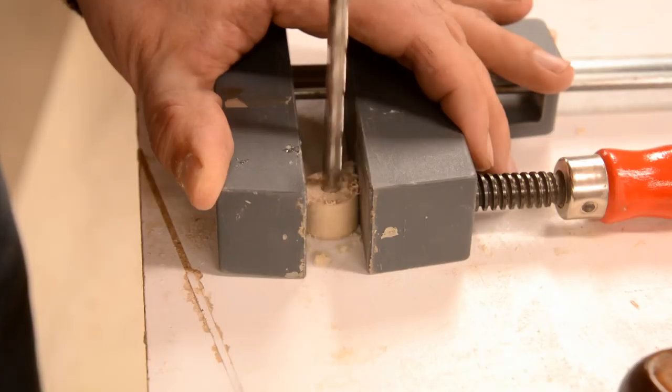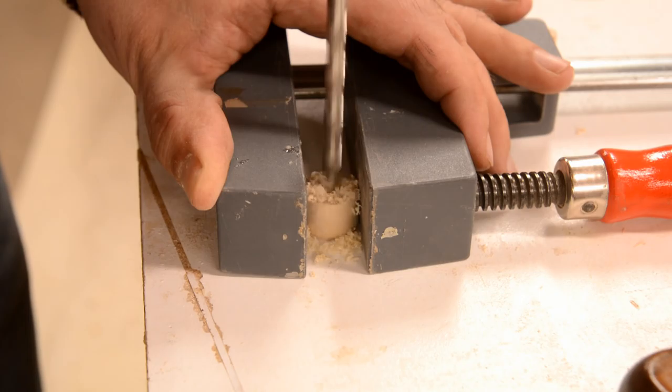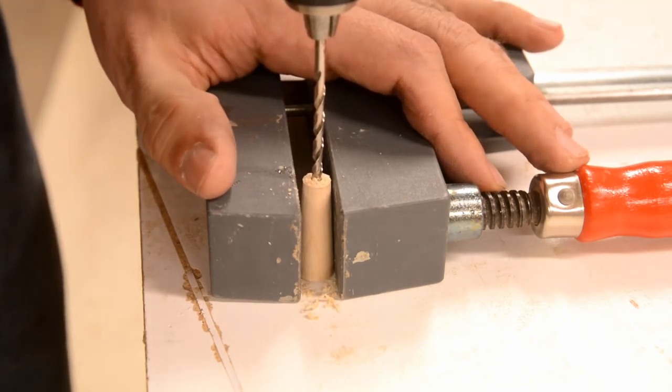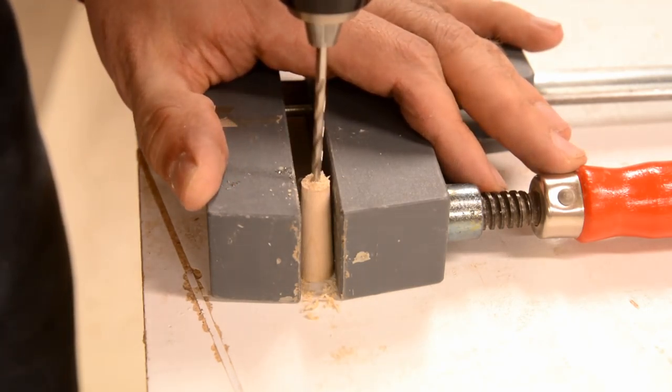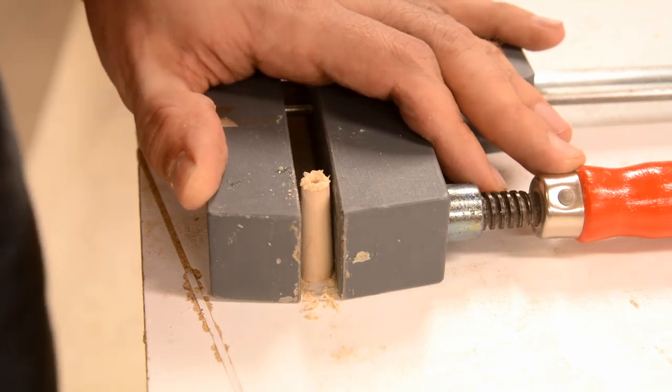Now I'm drilling holes in the column. Because the column gets narrower as it goes up, I need to use a smaller dowel at the top than at the bottom.